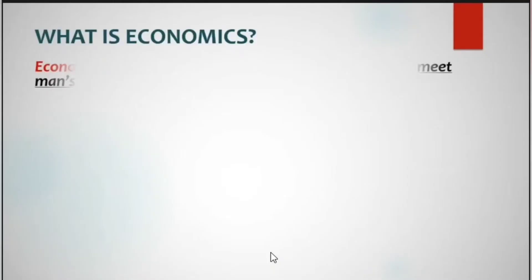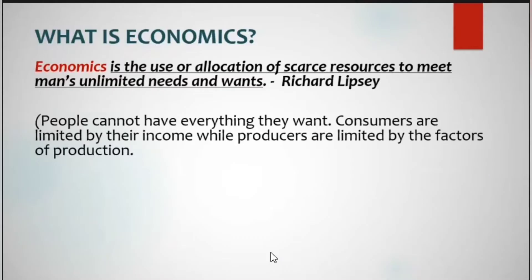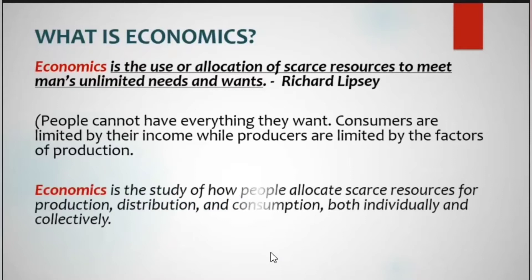What is economics? Economics is the use or allocation of scarce resources to meet man's unlimited needs and wants — this is by Richard Lipsey. People cannot have everything they want. Consumers are limited by their income, while producers are limited by the factors of production. Another meaning: economics is the study of how people allocate scarce resources for production, distribution, and consumption, both individually and collectively. The word 'scarce' appears in both definitions.